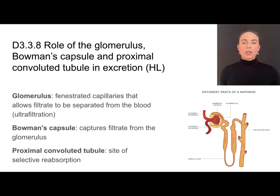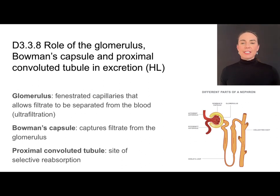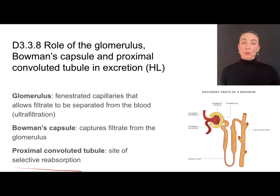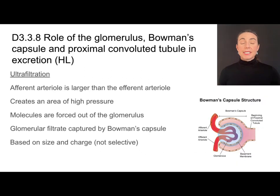Bowman's capsule captures the filtrate that is exiting from the glomerulus and sends it on to the proximal convoluted tubule. At this point, this is where we're going to have another process called selective reabsorption. Let's focus in on ultrafiltration first.